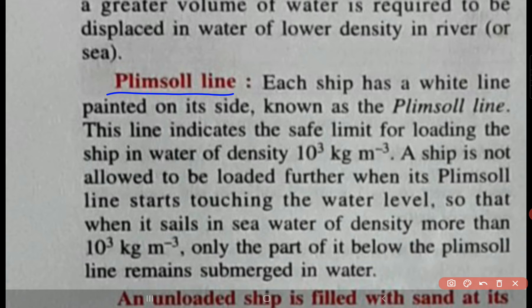You should not cross the Plimsoll line, because if it crosses the Plimsoll line in sea water, then obviously when it is going to river water it will be submerged more. So it has a probability of sinking, or if it is less loaded, it might have a probability of overturning when it goes to water of higher density. It needs to be very accurate while loading the ship. I hope you understood about the Plimsoll line.